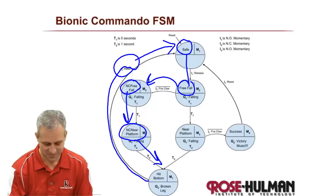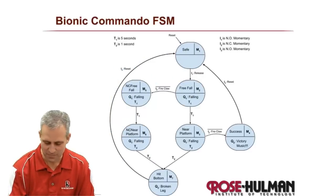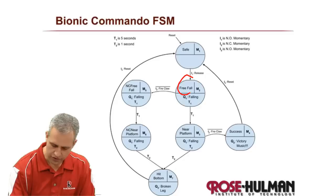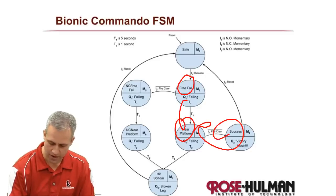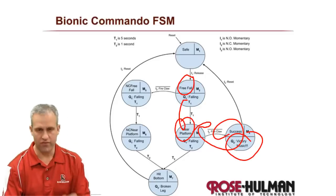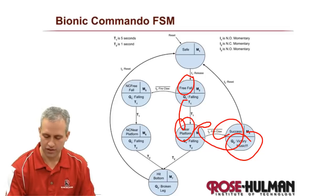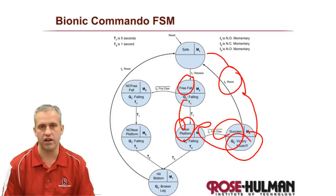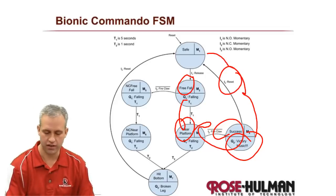If you hit the ground you can always reset the game — that's the beauty of video games, you have 50 lives and you've used one. The other option is of course you free fall, you're near the platform, you grab it, the victory music plays, and then if you want to try again you can reset and play a second time.